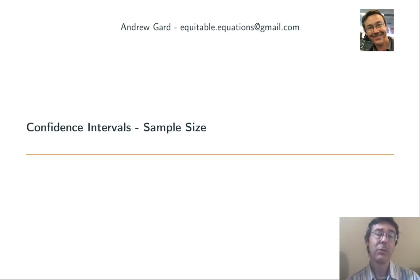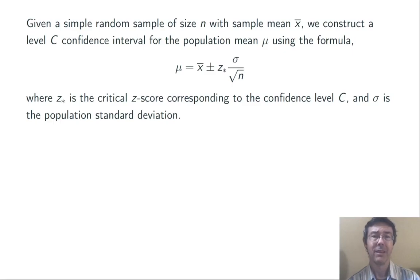Hey everybody, today we're talking about confidence intervals and sample size. Suppose we have a simple random sample of size n with a sample mean x̄. We can construct a level C confidence interval for the population mean μ using this formula: μ = x̄ ± z* σ/√n. Here z* is the critical z-score corresponding to the confidence level C, and σ is the population standard deviation.